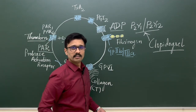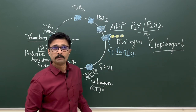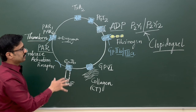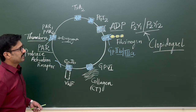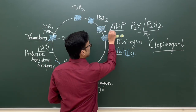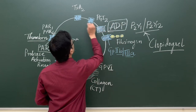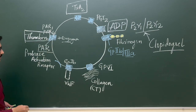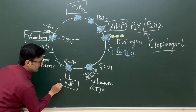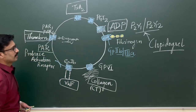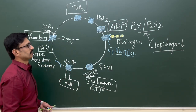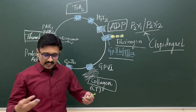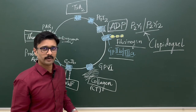Since ADP is a platelet activator, blocking its receptor with clopidogrel prevents the platelet plug from forming, making clopidogrel an anti-platelet drug. To summarize, the main platelet activators are: ADP, Thromboxane A2, thrombin, von Willebrand factor, and collagen. Fibrinogen binding to the GP2b/3a receptor helps in the aggregation of neighboring platelets.